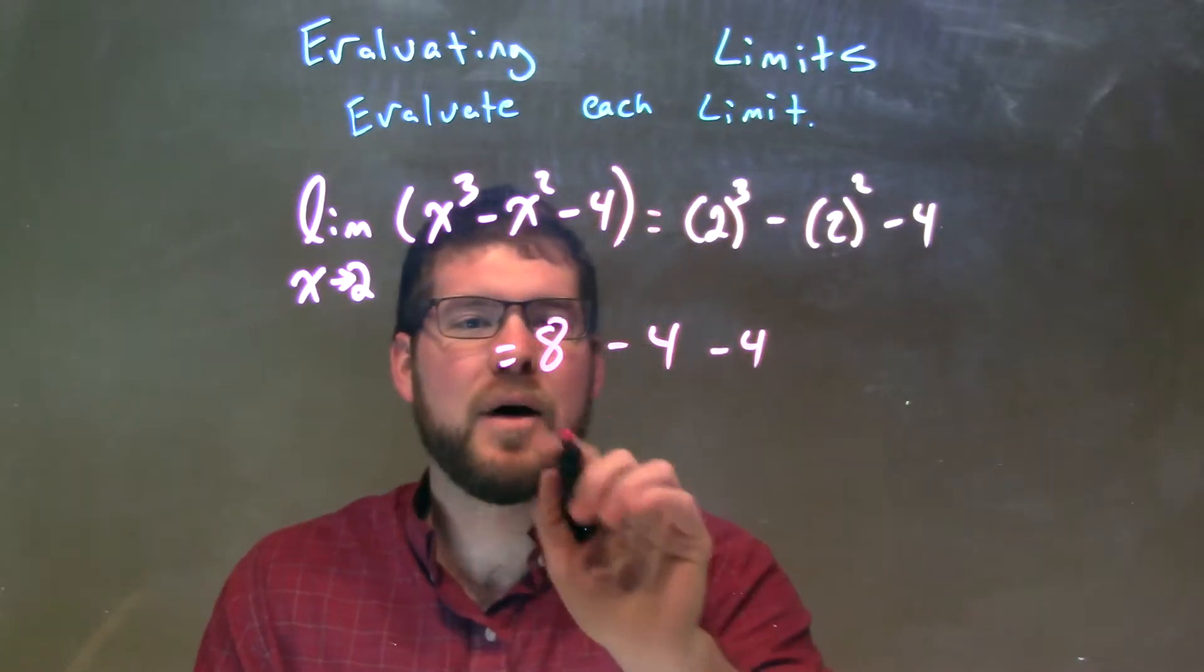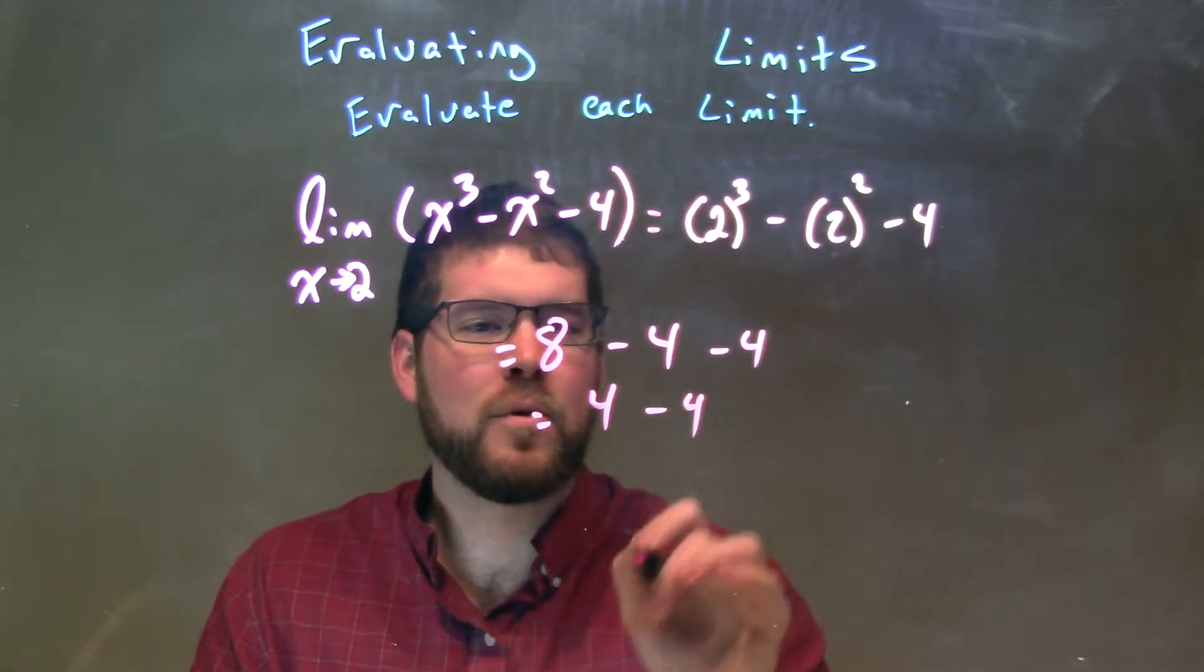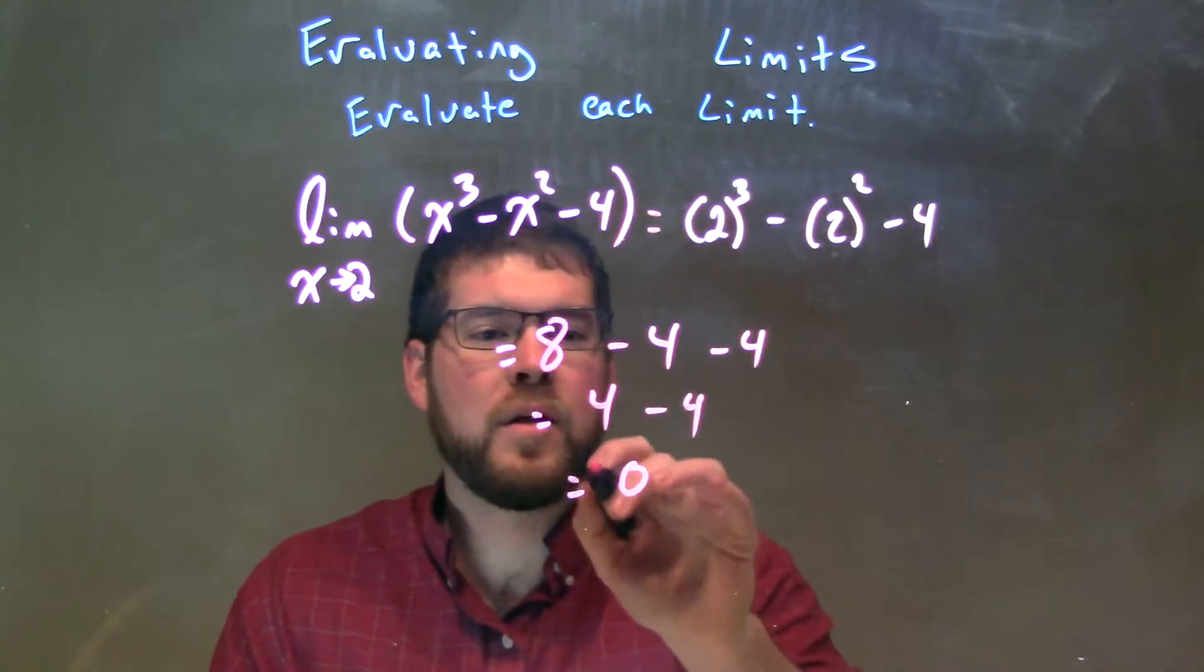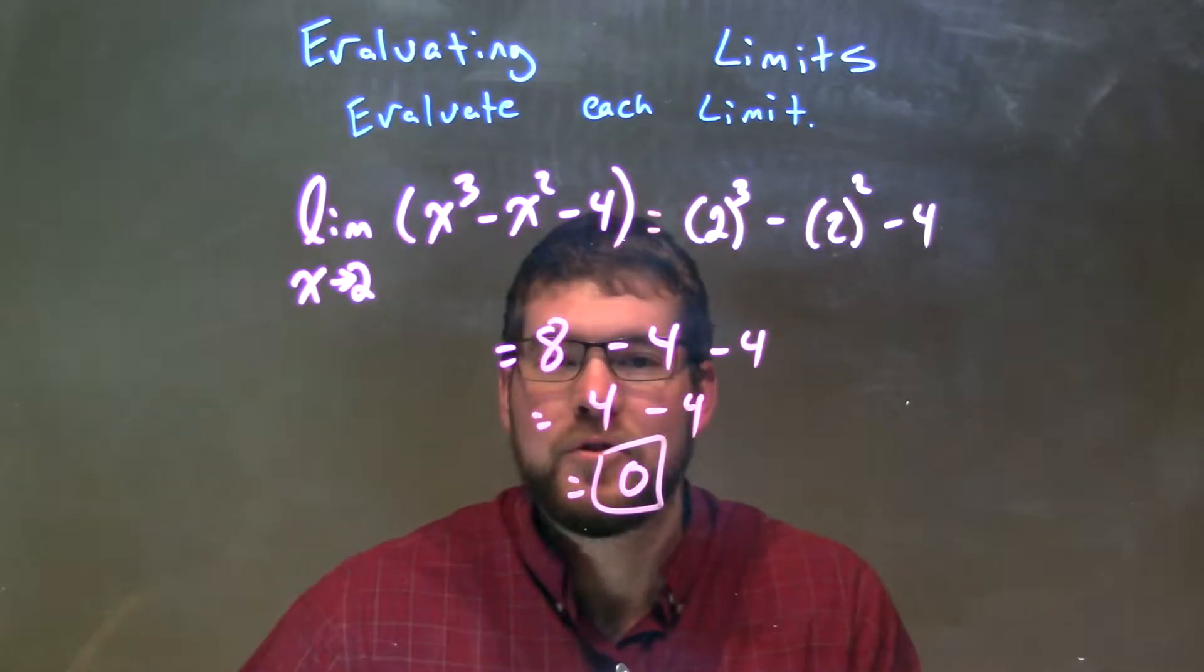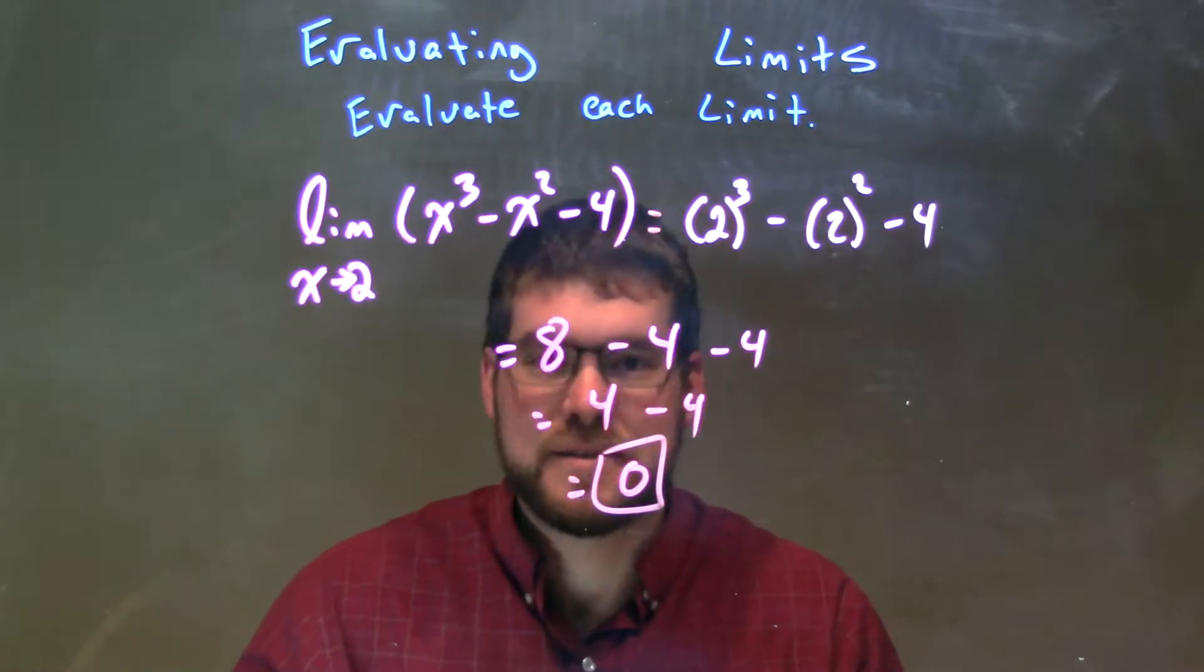Minus 2 squared is 4 minus 4. Let's be careful here. 8 minus 4 is 4, and 4 minus 4 is 0. So our final answer here, this limit approaches 0. The limit as x approaches 2 is equal to 0.